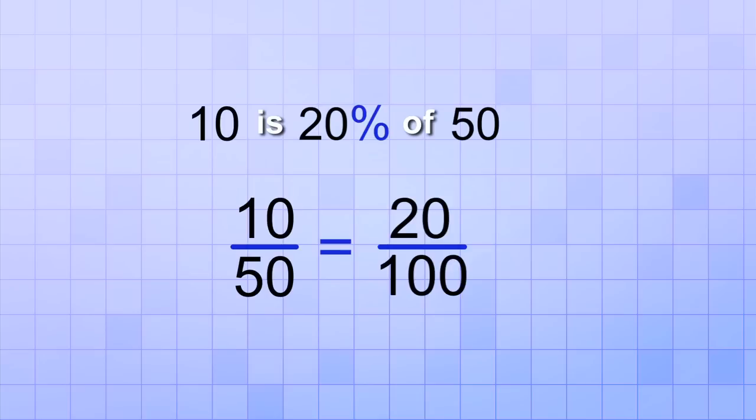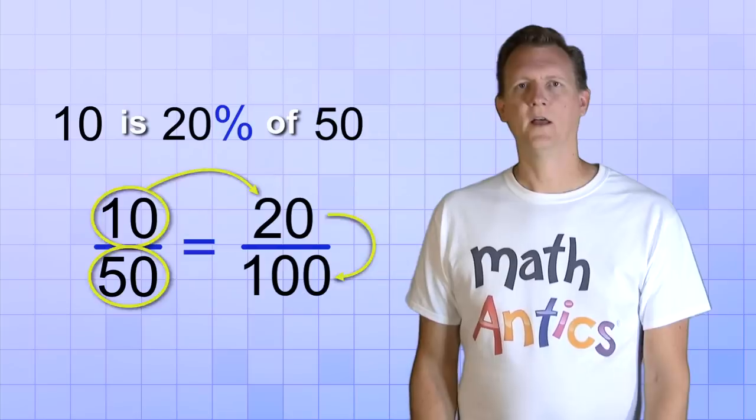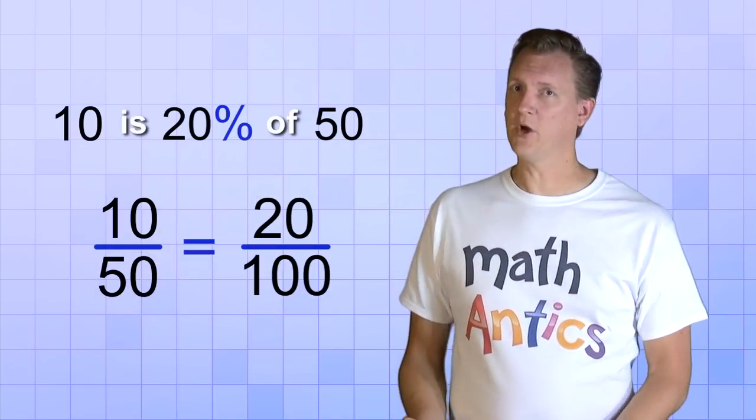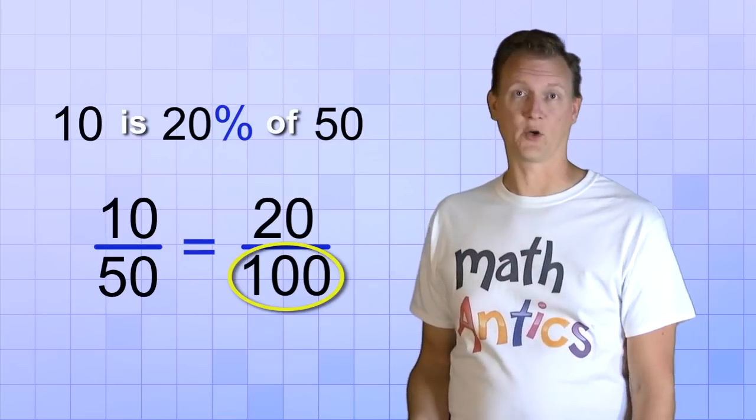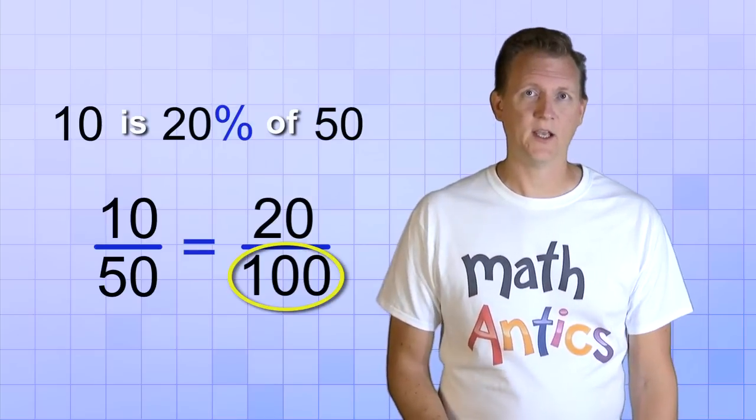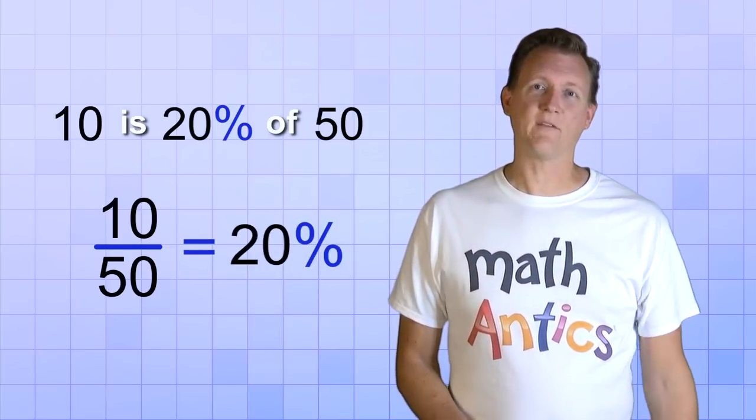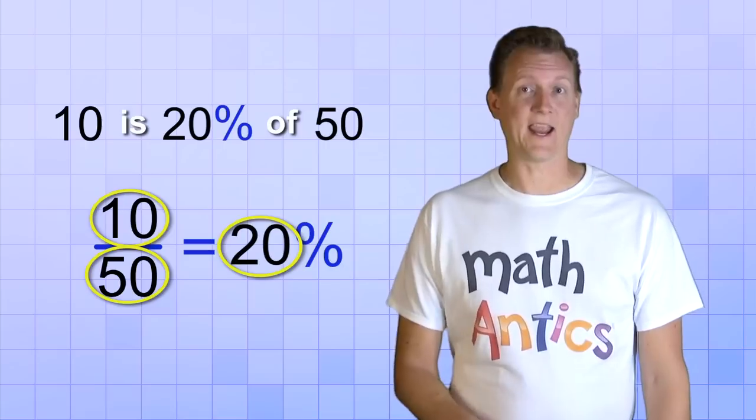This is exactly the same as saying that 10 is 20% of 50. So these are the four components of a percent problem. But since we know that 100 is always going to be the bottom number of this equivalent fraction, the percent, we can just rewrite it using the percent symbol. That way we can focus on the other three numbers that can change.